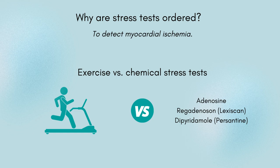There are many types of stress tests that can be done with different kinds of scans, such as an echocardiogram, MRI, PET scan, and SPECT scan, and the use of vasodilator agents such as adenosine, regadenosin, or dipyridamol. This presentation focuses on a patient having a chemical stress test with regadenosin and nuclear imaging with a SPECT scanner.